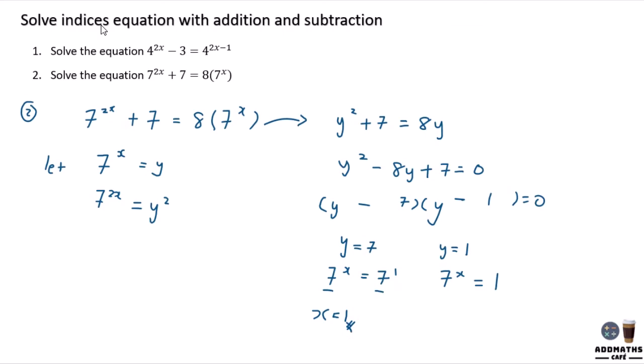And in this case, 7^x equal to 1. So 7^x is equal to 7^0. Anything to the power of 0 will be equal to 1. So in this case, same base, I can compare using the power. It will be x equal to 0.